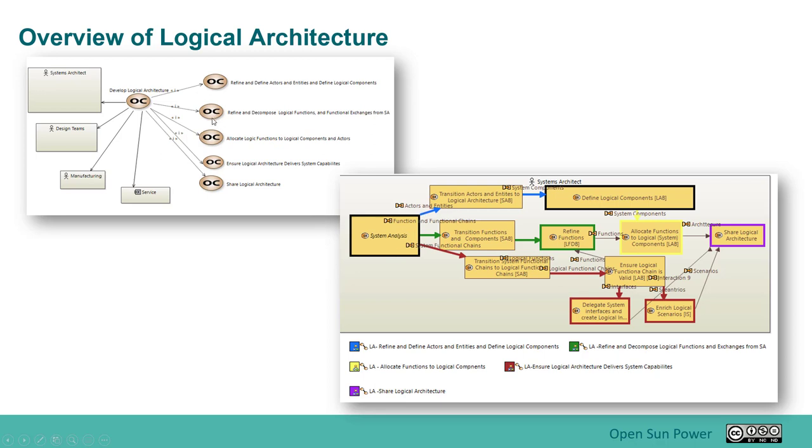Next, we're going to refine and decompose the logical functions and the functional changes from the system analysis. So basically, we're going to take the functions that we had from the system and work at breaking them up so that we can see how they can fit the components that we are going to include in our logical architecture. The components can be fairly high level at this point, and you'll see that as we walk through our examples in the following videos.